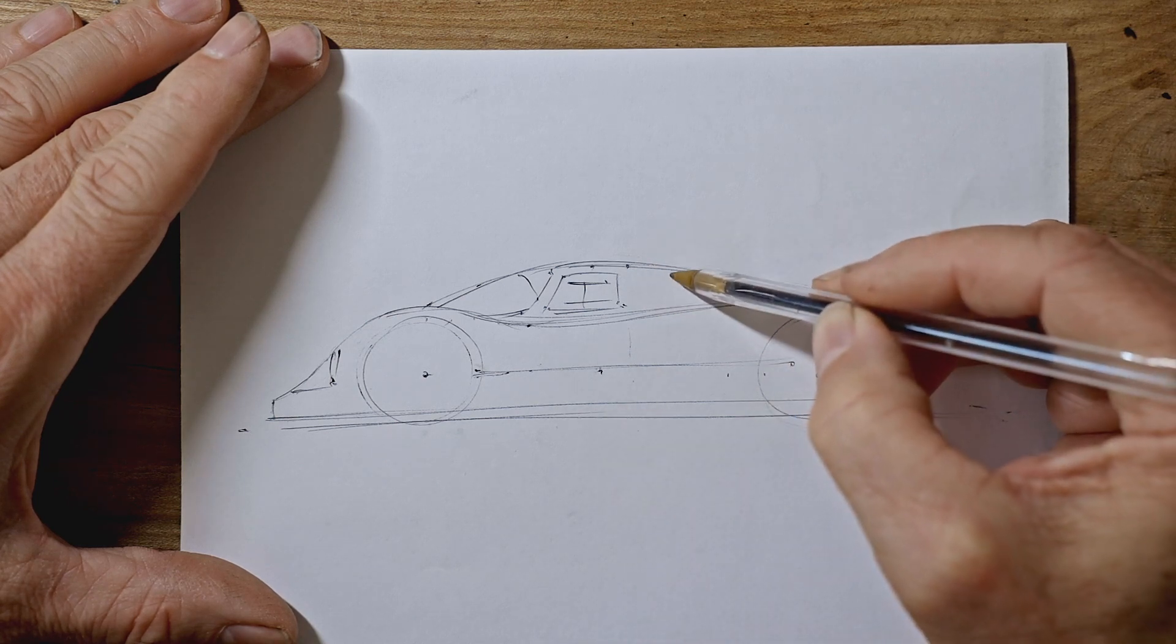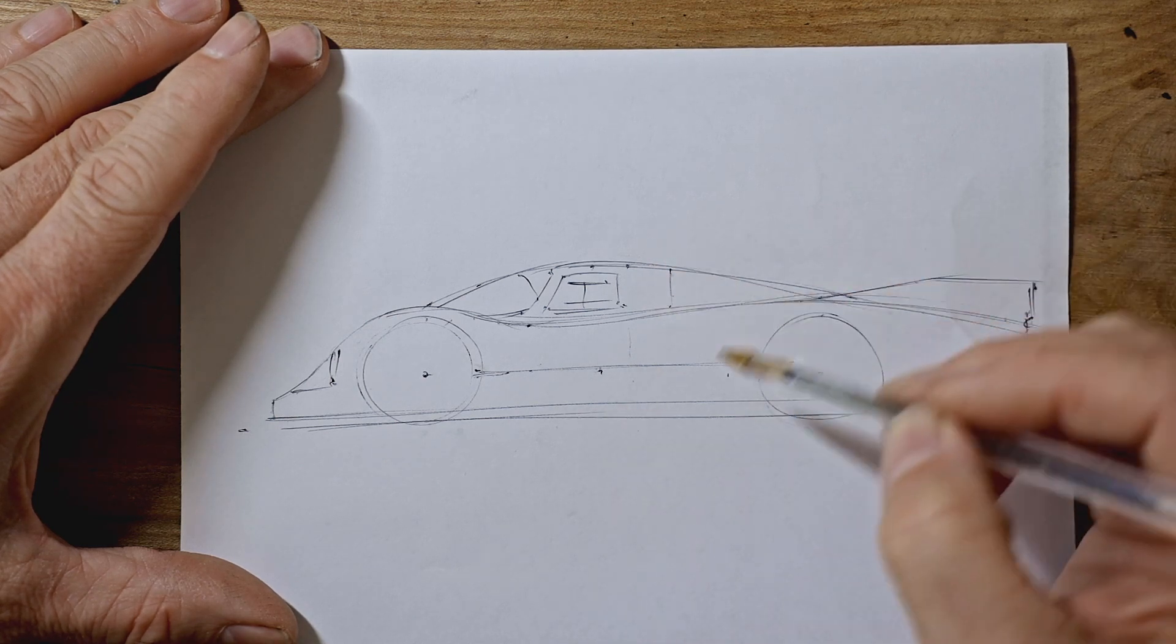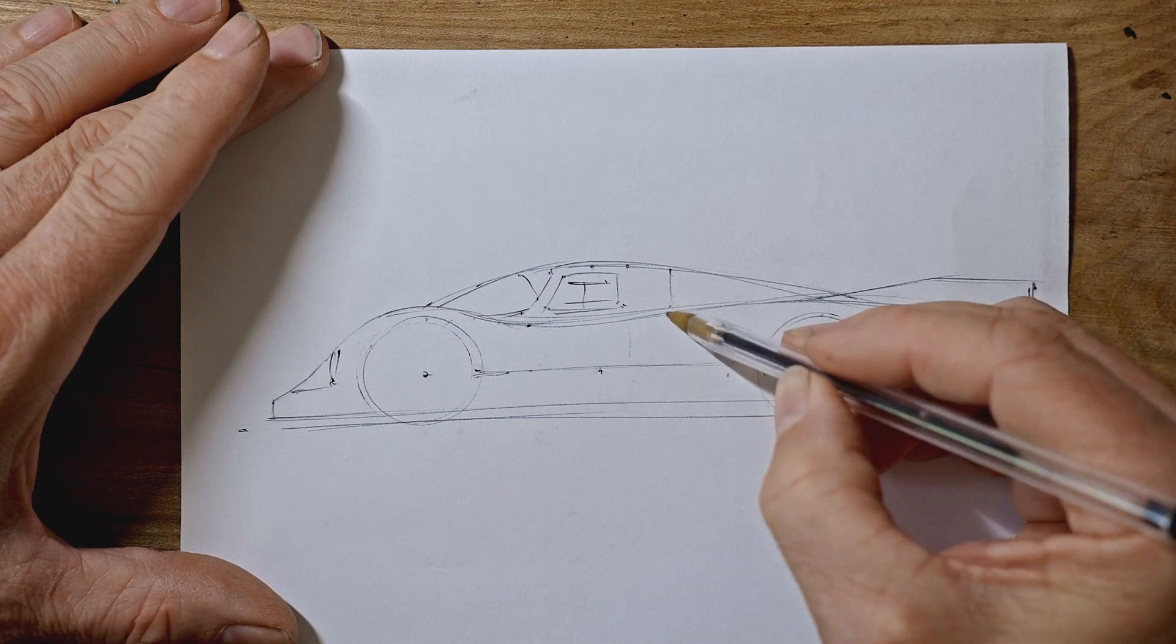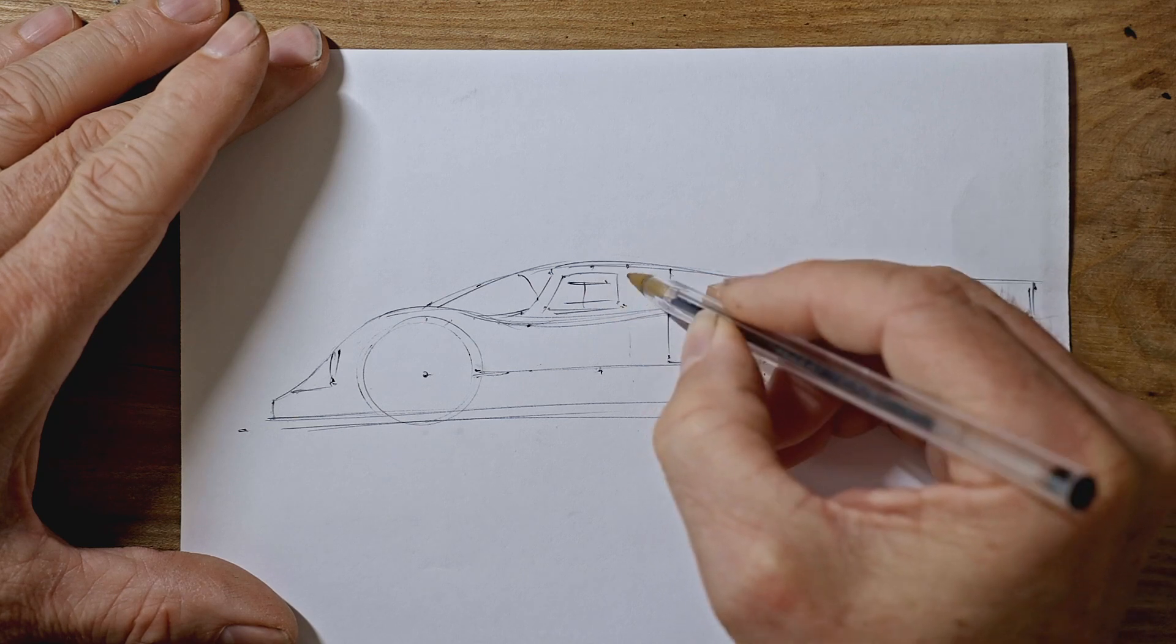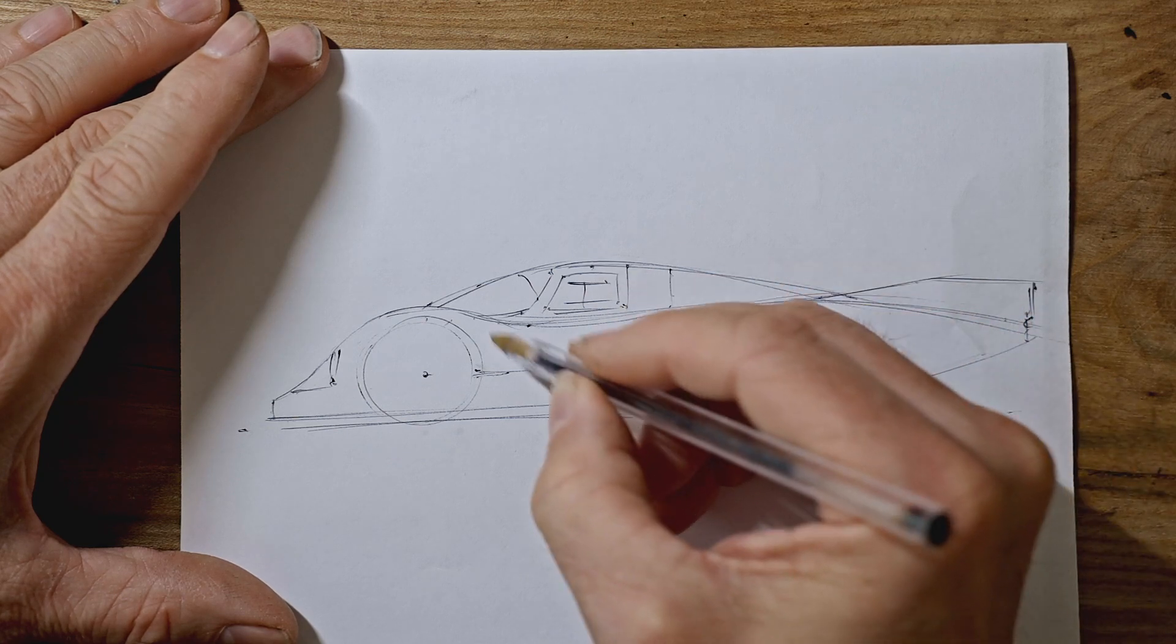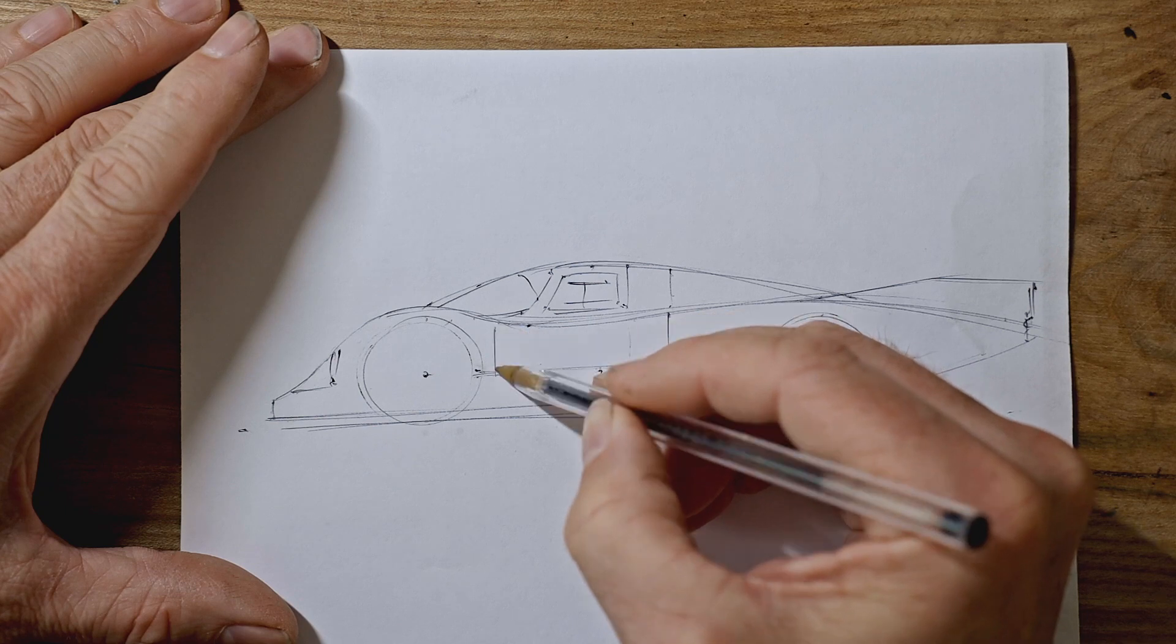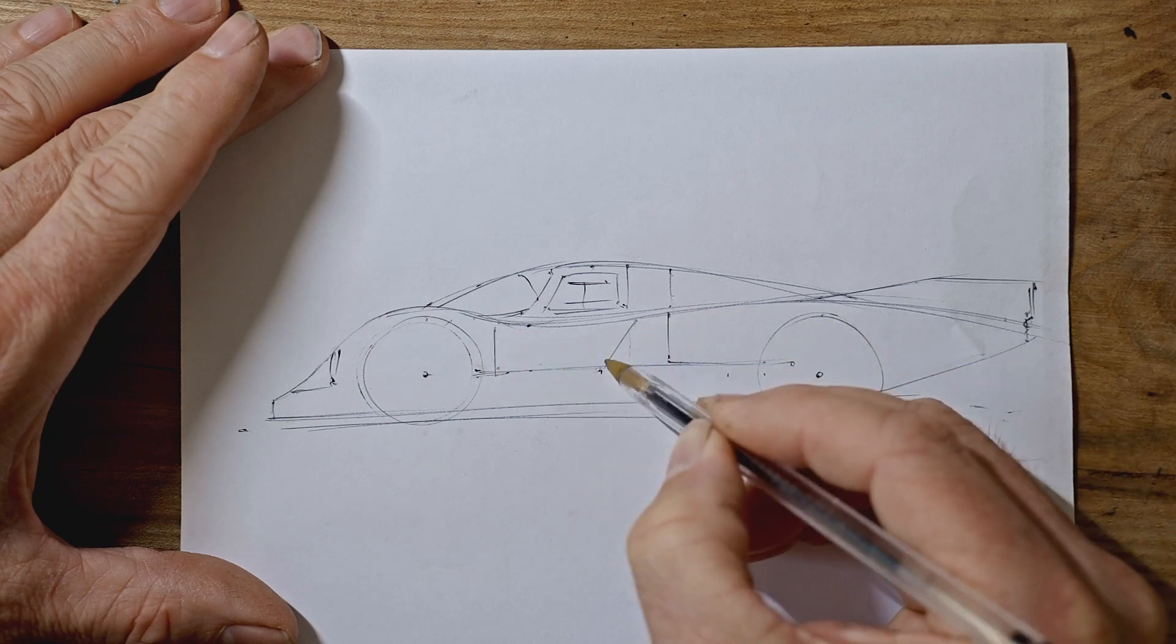And now a bit further back we've got the join for the rear bodywork. It comes down to this line there. The door has a join line and I think it has a square front edge and a sloping back edge.